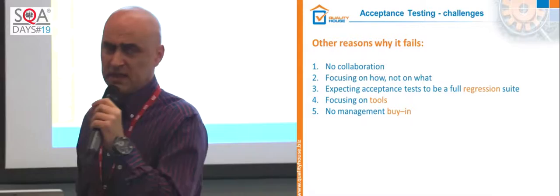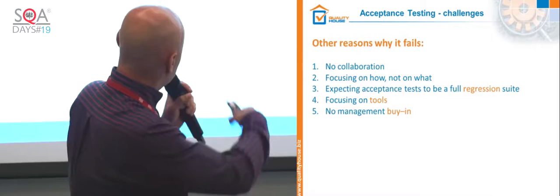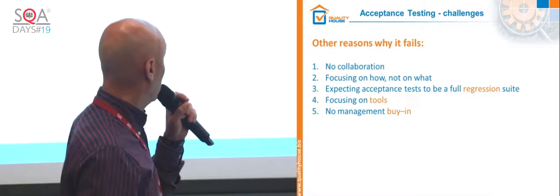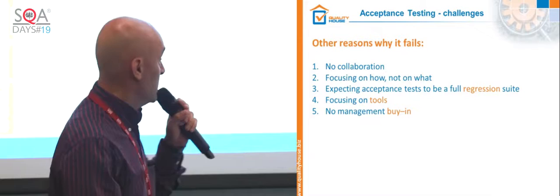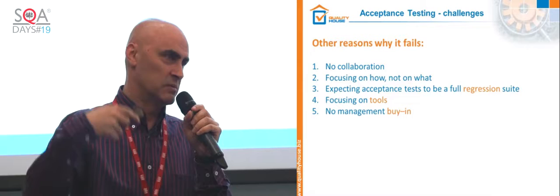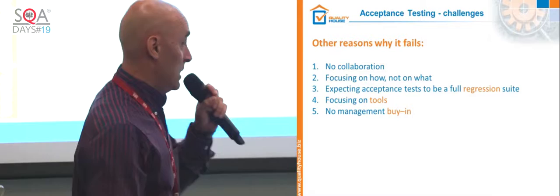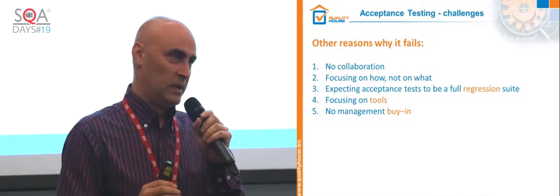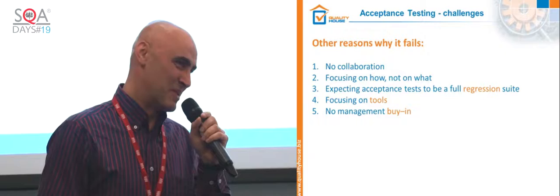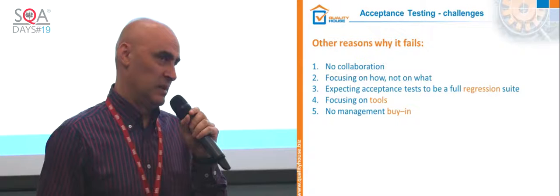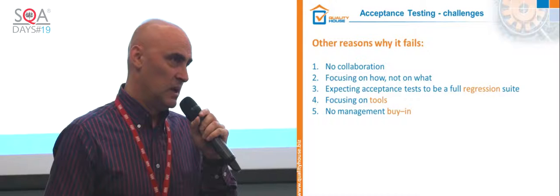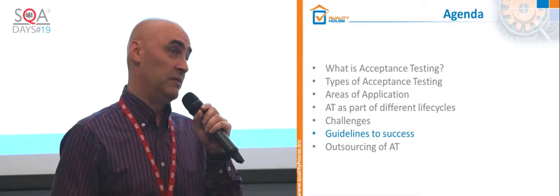There are some other reasons for failure. You have to focus on what happens, not how. Sometimes people confuse acceptance testing with regression testing — that's a different story. Sometimes people focus too much on tools: 'we bought a tool, it's going to do the job' — no, people do the job; we have to use tools in the proper way. And also, buy-in from management: if management is not motivated to do proper acceptance testing, the result will be minimal.